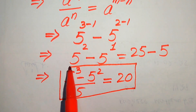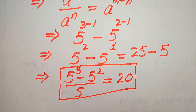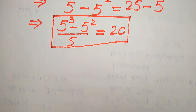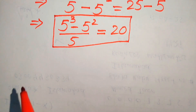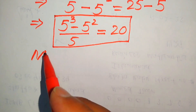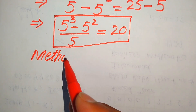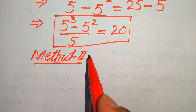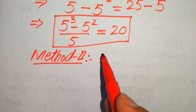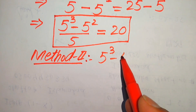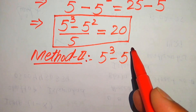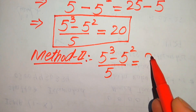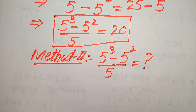This is the final simplified form from the first method — the answer is 20. Now we solve this problem using the second method. The given expression is again 5 cubed minus 5 squared, divided by 5.